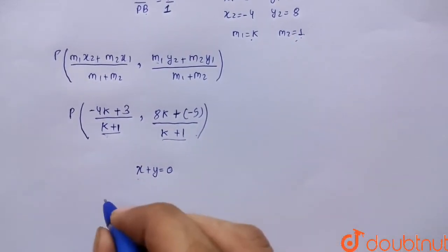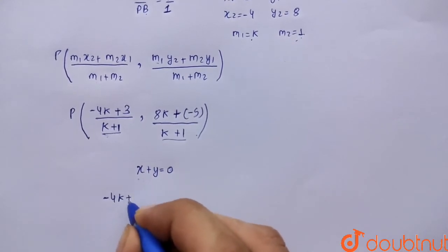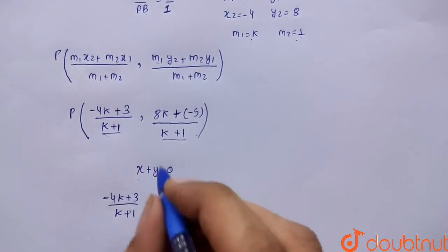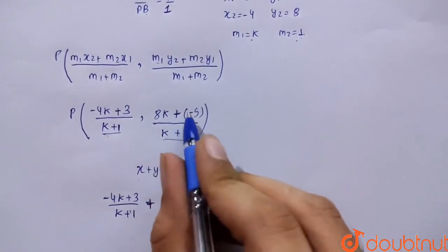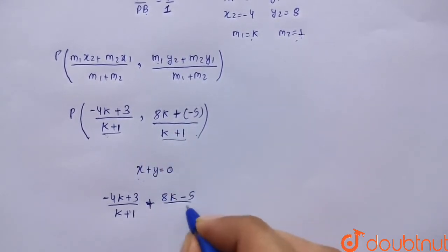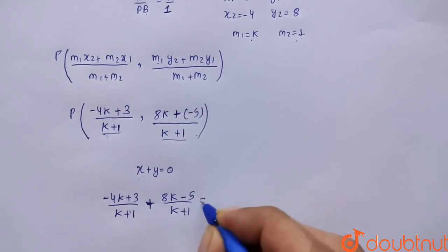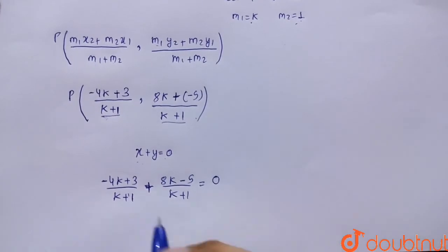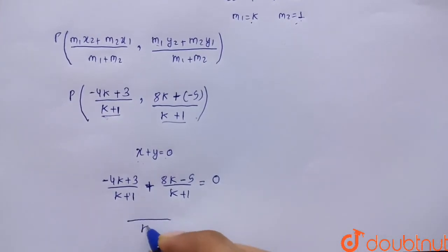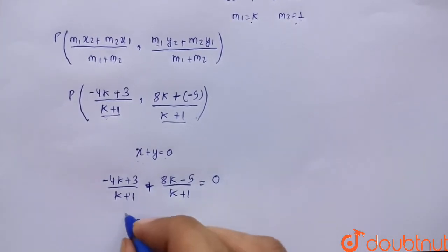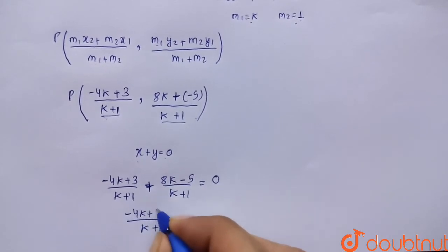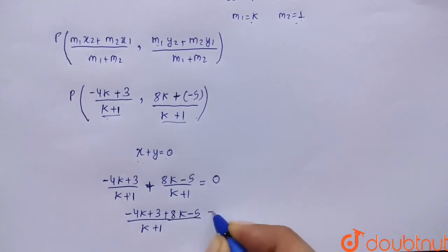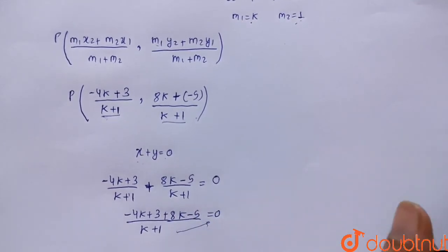So substituting, we get: minus 4k plus 3 upon k plus 1, plus 8k minus 5 upon k plus 1, equals to 0. The LCM of k plus 1 and k plus 1 is k plus 1 itself, so the numerator becomes minus 4k plus 3 plus 8k minus 5 equals 0, since k plus 1 is multiplied to 0.